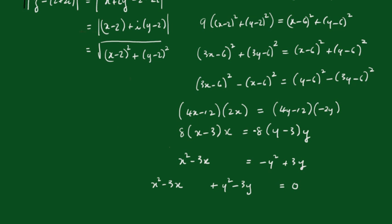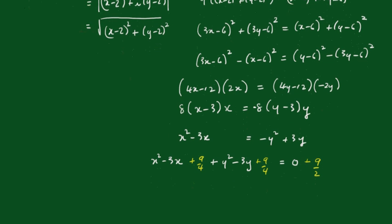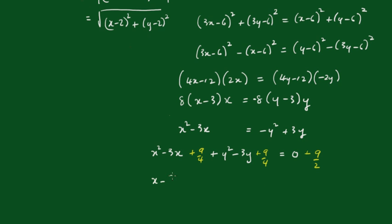Now let's change the color here. Now half this coefficient and square it, I'm going to get 3 on 2 squared, 9 on 4, and a 9 on 4 here, and that will give me 9 on 2 on the other side, plus 9 on 2 on the other side. So now this becomes x minus 3 on 2 all squared plus y minus 3 on 2 all squared is equal to 9 on 2.